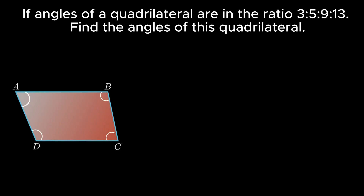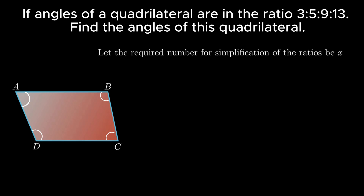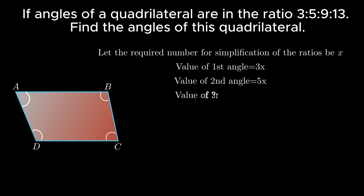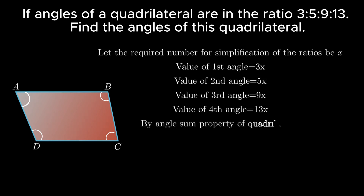To find these angles, let the number required for the simplification of these ratios be x. Therefore the value of the first angle becomes 3x, the value of the second angle becomes 5x, the value of the third angle becomes 9x and the value of the fourth angle becomes 13x. By using the angle sum property of a quadrilateral, that is the sum of all four angles equals 360 degrees.